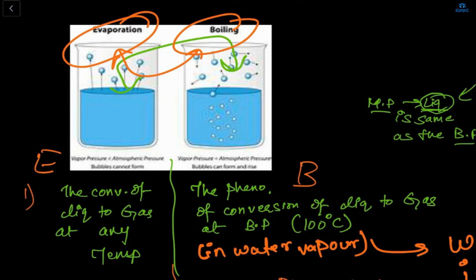In evaporation, the liquid also converts into the gaseous state, but the difference is that the conversion of liquid to gas at any temperature below the boiling point is known as evaporation. Also, evaporation is a surface phenomenon — only the molecules at the surface of the liquid get converted.